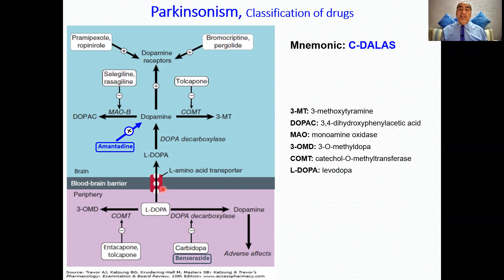Continuing the mnemonic: we can use drugs that enhance or activate dopaminergic receptors, such as bromocriptine and pergolide — these are ergot derivatives — or non-ergot derivatives like pramipexole and ropinirole. We can also use amantadine, which facilitates the release of dopamine, or L-DOPA itself. As noted, L-DOPA can be converted in the periphery into dopamine.